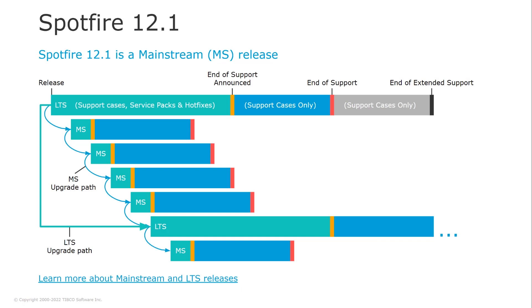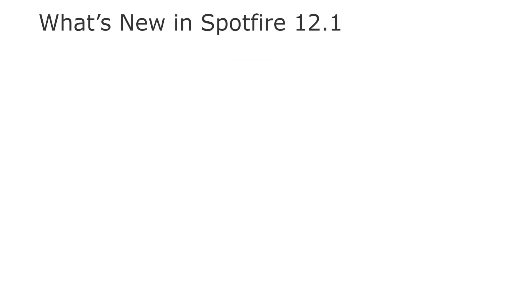Spotfire 12.1 is a mainstream release. Mainstream releases are frequent, approximately every one to two months, and are supported until the next mainstream release is available. Spotfire 12.1 provides a set of small but useful improvements, starting with visual improvements for data functions.